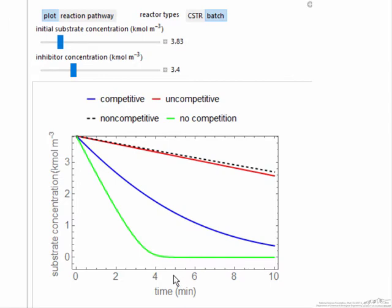Here we're plotting the substrate concentration as a function of time. It drops the fastest when there's no competition, there's no inhibitor present. And then for the three different types we're looking at, the effect is the strongest in this non-competitive case where there's multiple ways that the inhibitor can affect the conversion of the substrate to the desired product.